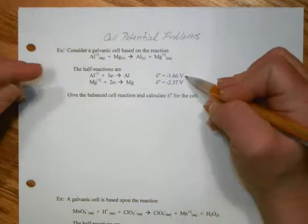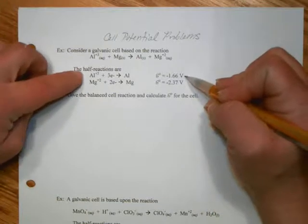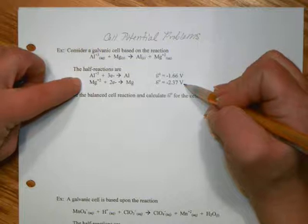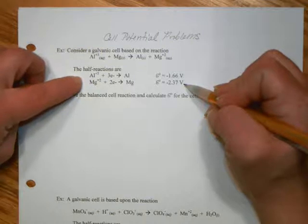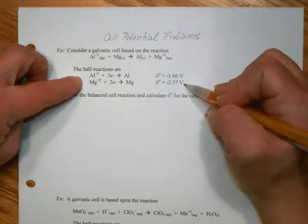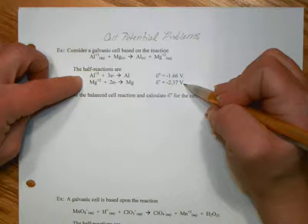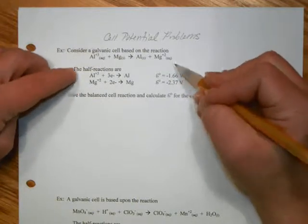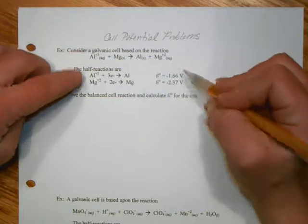So obviously, if we would change this to be a positive 1.66, when added to negative 2.37, it will still provide a negative value, and that would be a non-spontaneous cell for us. So this will be the reaction that we will flip, which, again, if we look at the overall reaction, we get confirmation of.